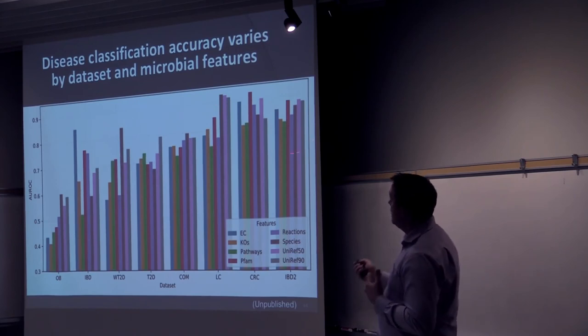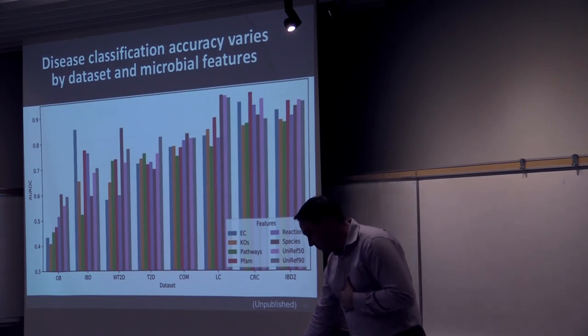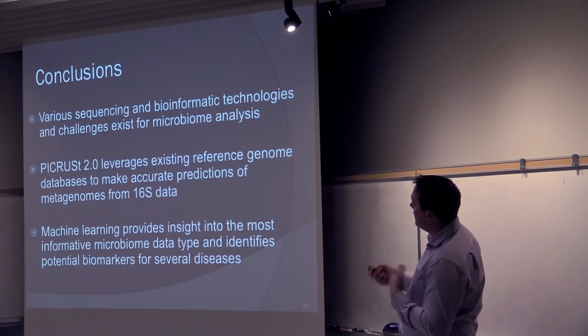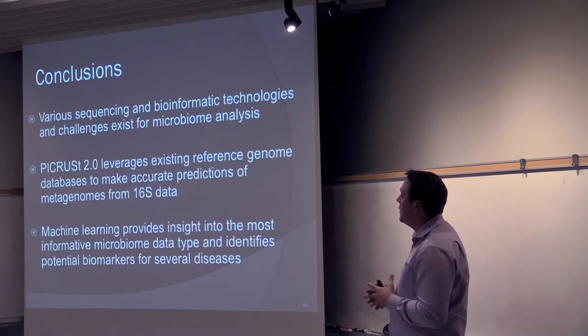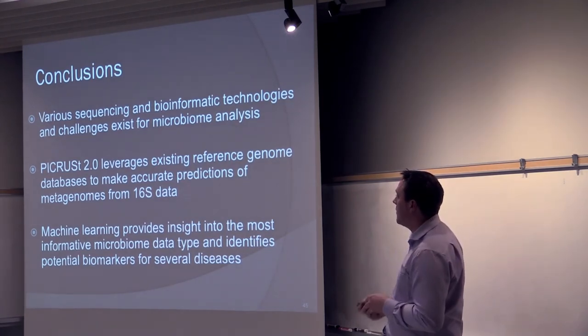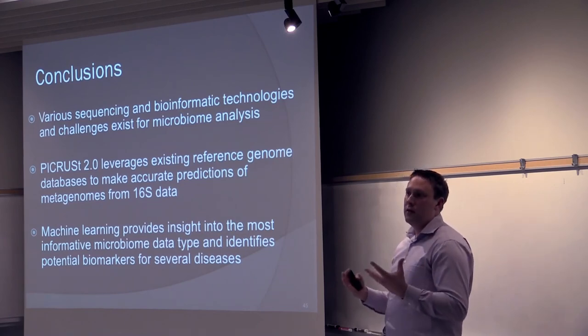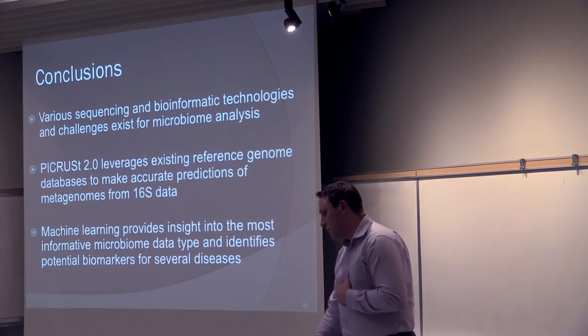So, our take-home message is actually that function isn't always doing better with taxa, and that we're sort of teasing this out in more detail at this point. So, this is obviously unpublished, and we're still working on it. Okay, so that's it for me, basically. So, hopefully, I've concluded and shown you that there's various sequencing and bioinformatic technologies and challenges that exist for microbiome analysis. PyCrest2 uses existing reference genome databases and uses that to infer and predict possible functions from 16S data. And that machine learning can provide insight into not only just coming up with better classifiers or accuracy, but also informing some of the key features or best feature types to look at for those diseases.